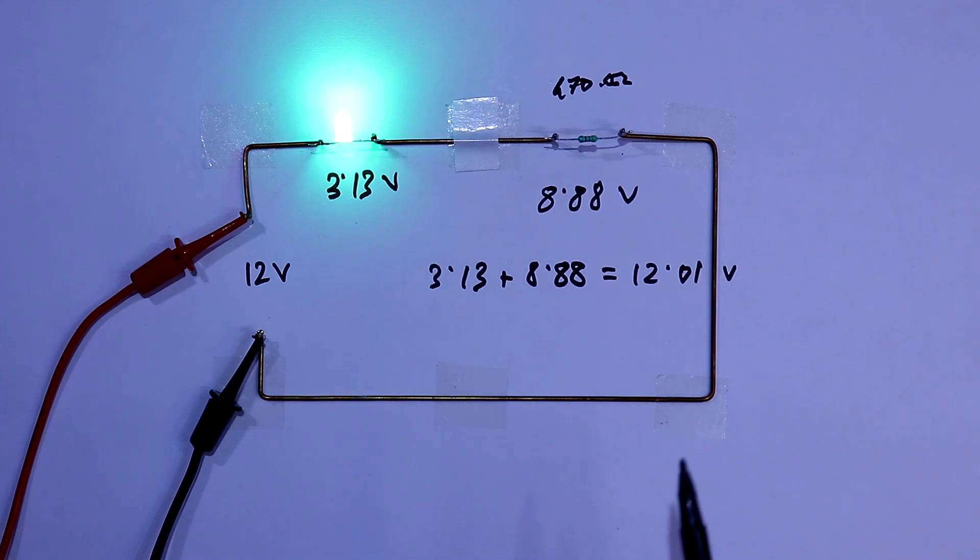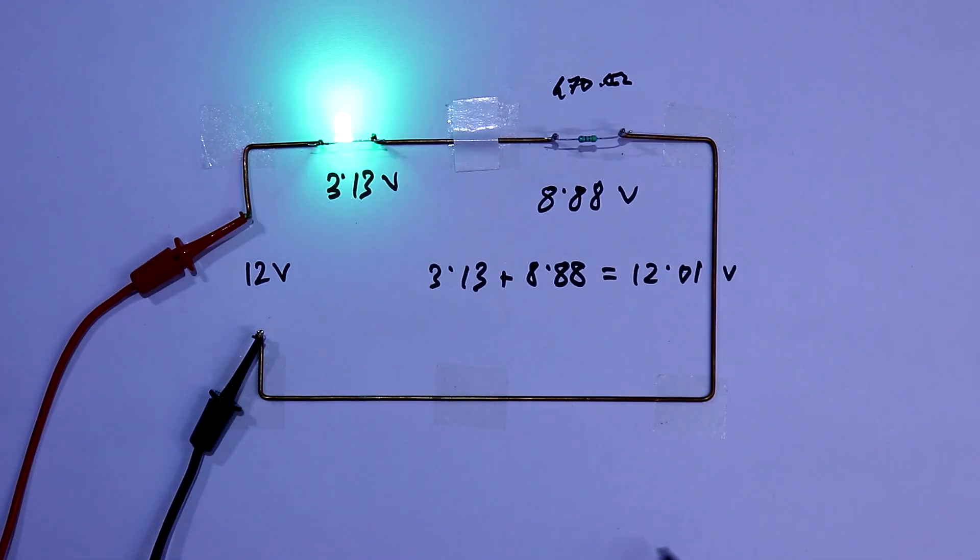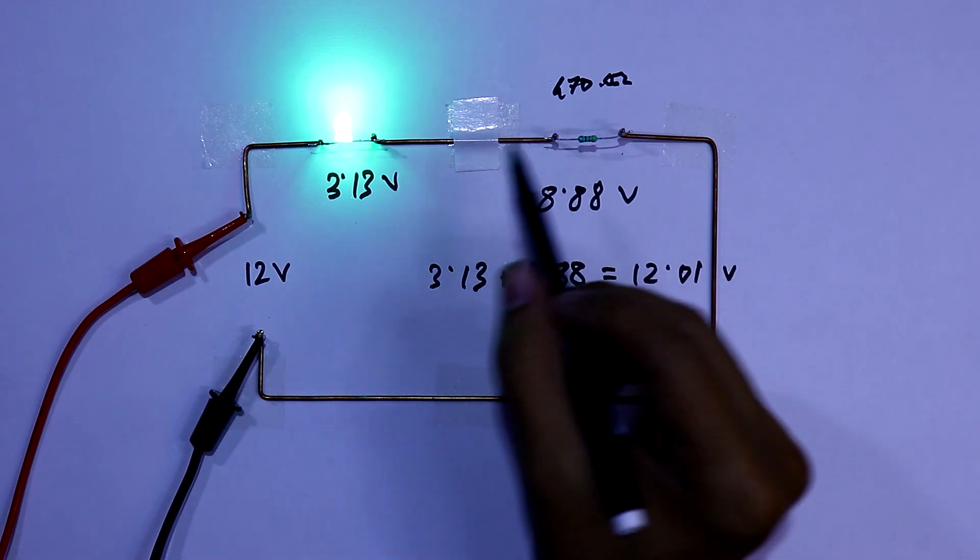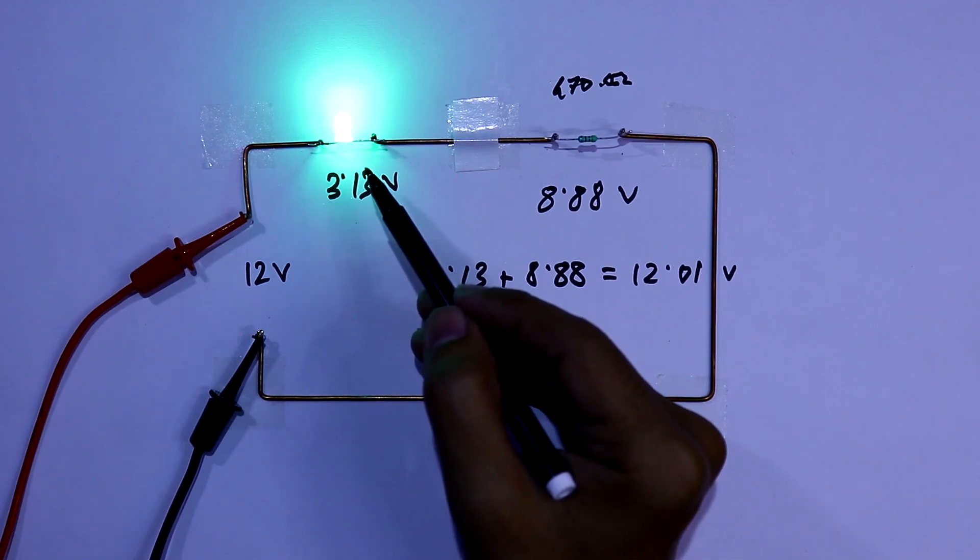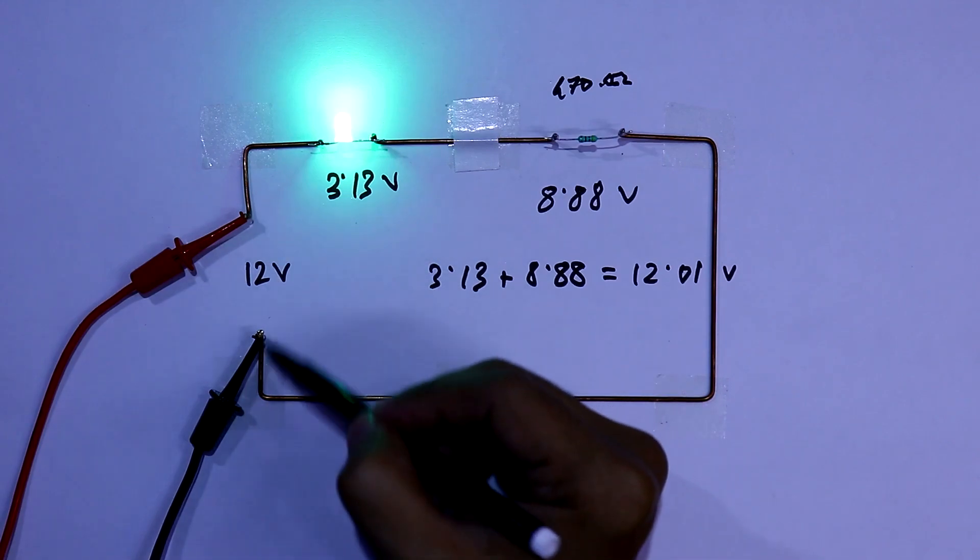So this is how you have to calculate the resistor value for a load. From this we have learned that the resistor value depends upon the voltage drop of the load, the current through the load, and the power supply.